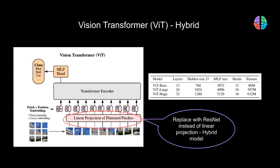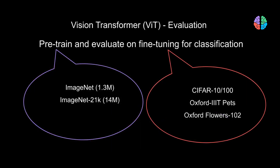The linear projection layer can be any network — for instance, it can be replaced by several layers of a ResNet architecture. The authors indeed tried that and call it the hybrid model in the paper. Now that we have seen what ViT is, let's see how they evaluate it.